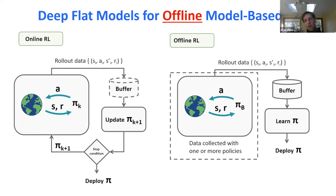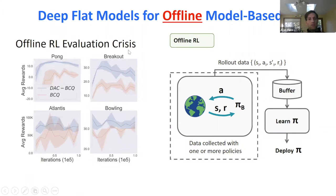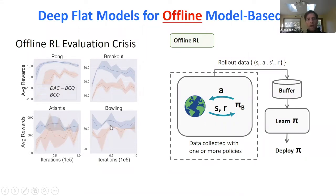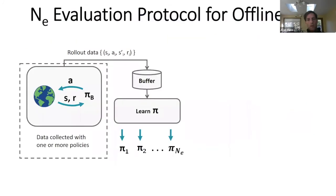This is actually a great problem for people in the planning community to start looking at, because you might argue this is a place where planning algorithms have an edge — you can't rely on getting 10 million more data samples that let a model-free algorithm work. You have to use your data as efficiently as possible. There is what I'd call an offline RL evaluation crisis: usually offline RL is described one way, but papers actually run an iterative algorithm and just report the best performance across iterations, which is questionable.